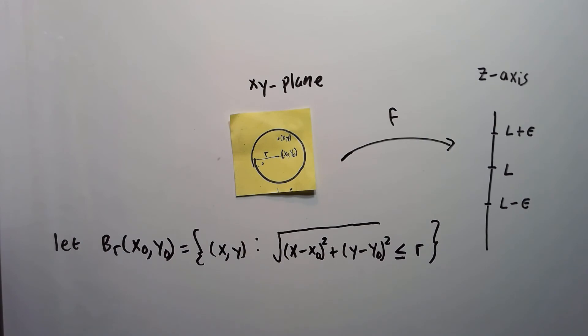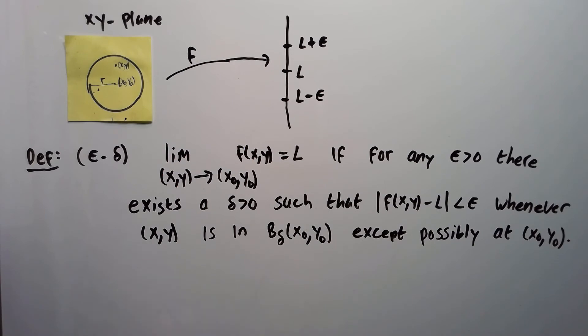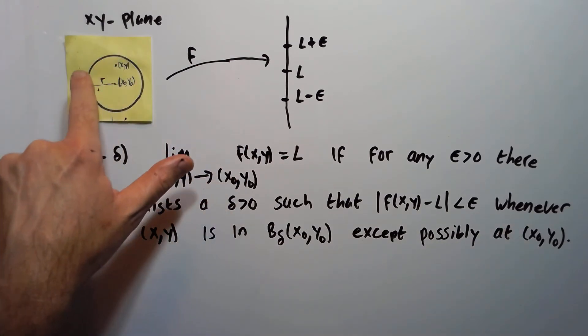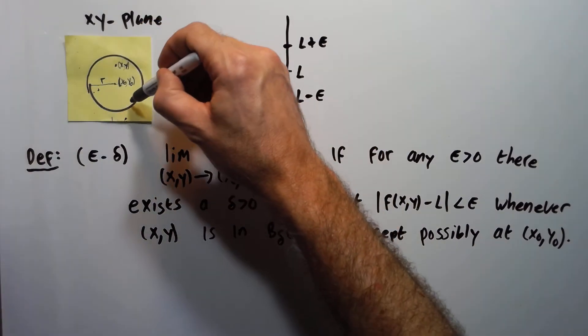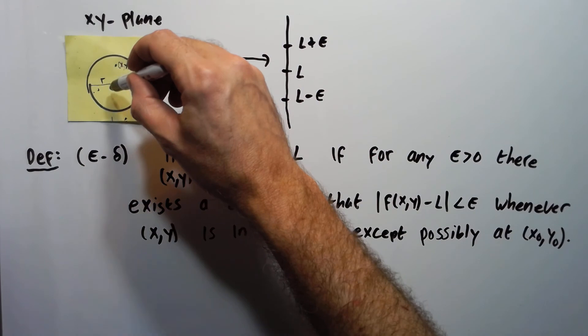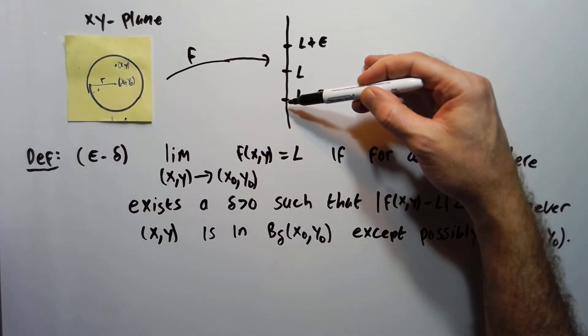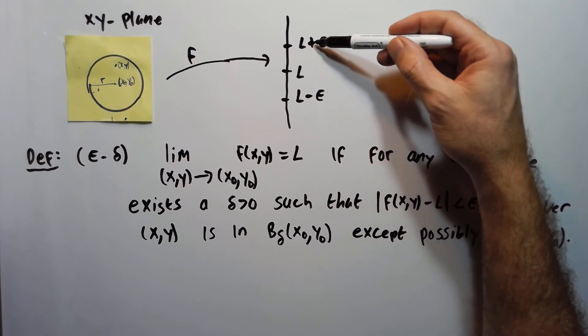So now let me write the epsilon-delta definition of limit. So here's the epsilon-delta definition for a two variable function. So limit as (x,y) goes to (x0, y0) of your function f equals L if for any epsilon there exists a delta greater than zero such that |f(x,y) minus L| is less than epsilon whenever (x,y) is in the circle over here, except possibly at (x0, y0). So it means that you can find a circle in the x,y plane around x0, y0 such that all the x,y values in there get mapped into between here and here, so between L plus epsilon, L minus epsilon.